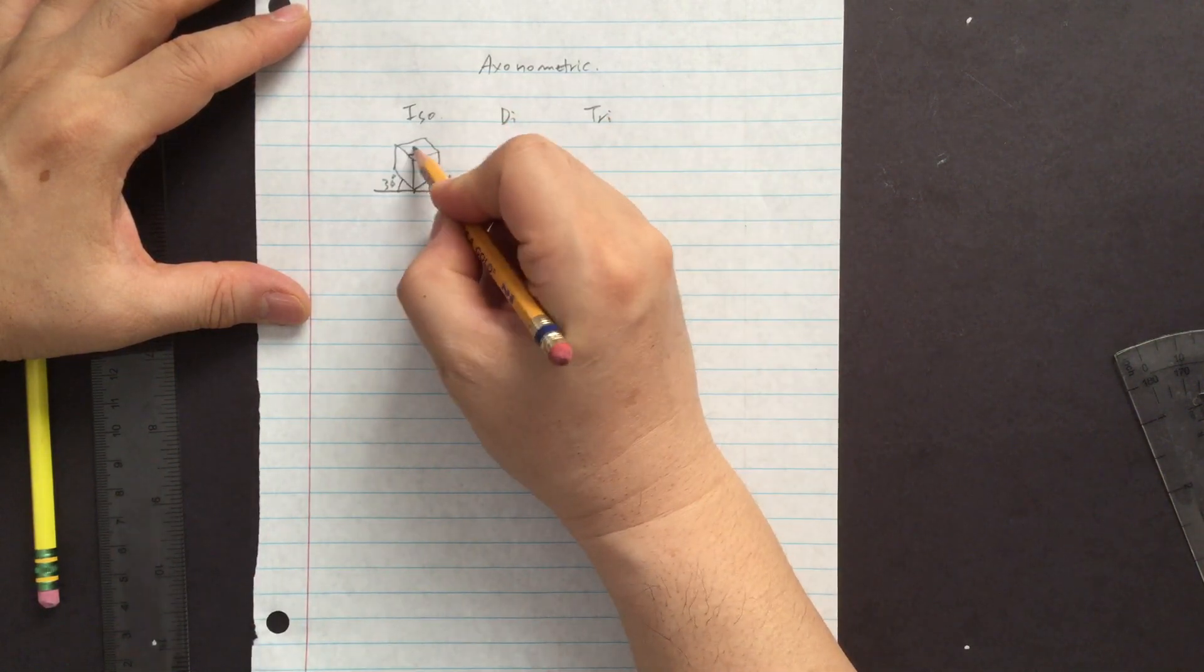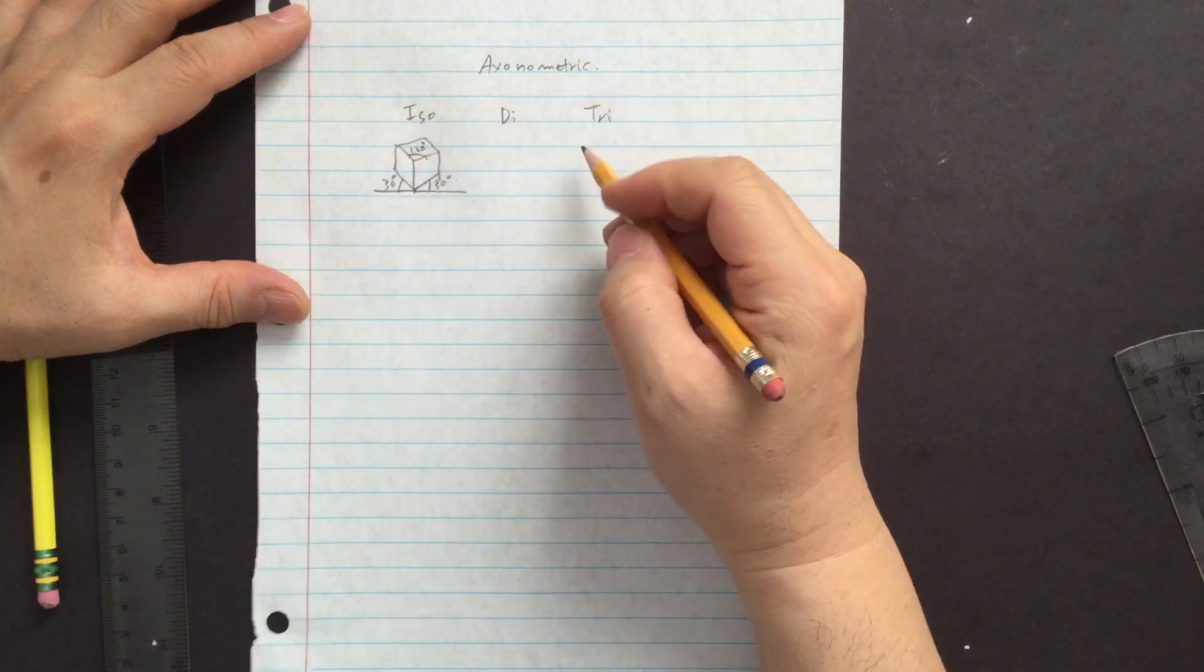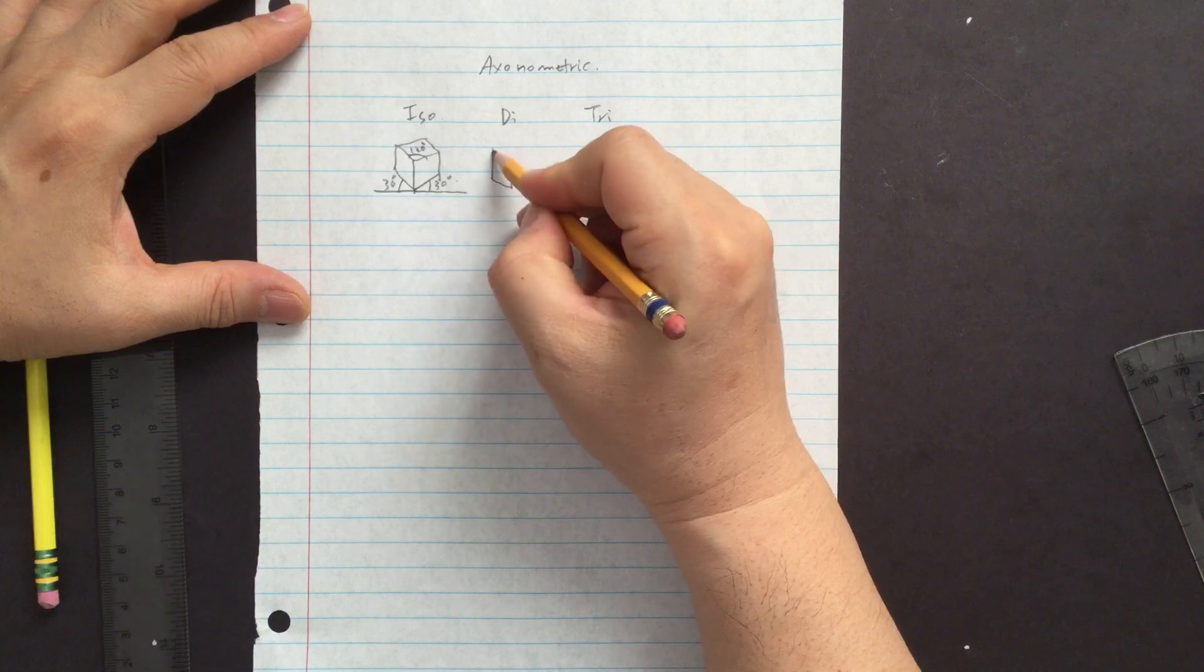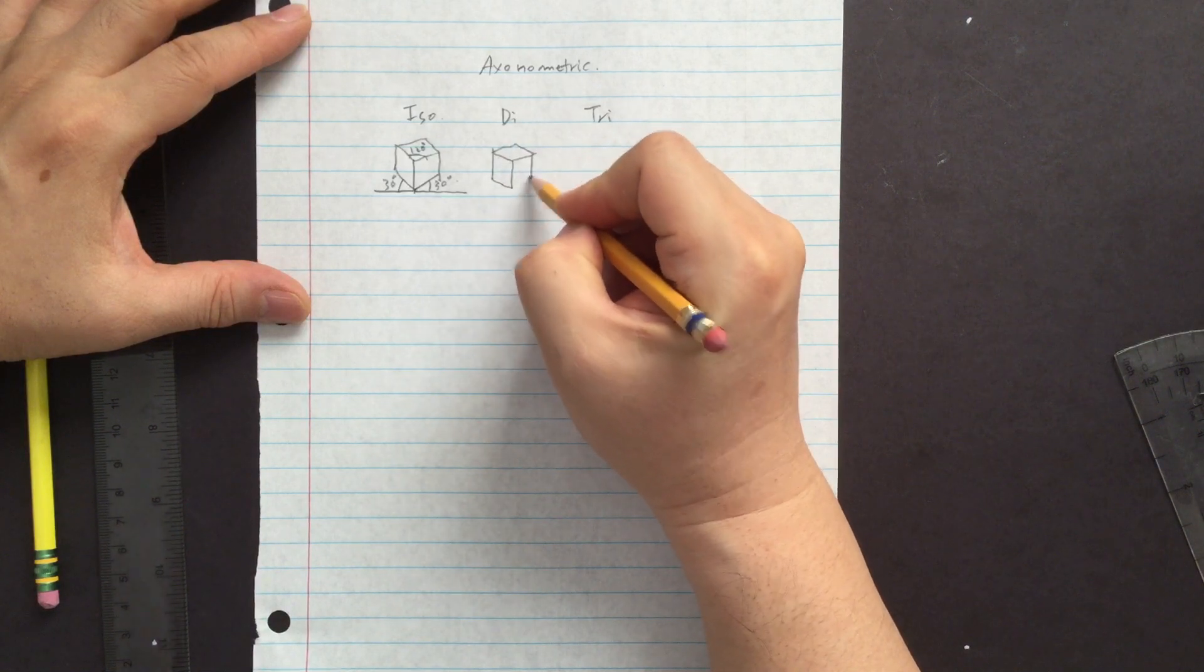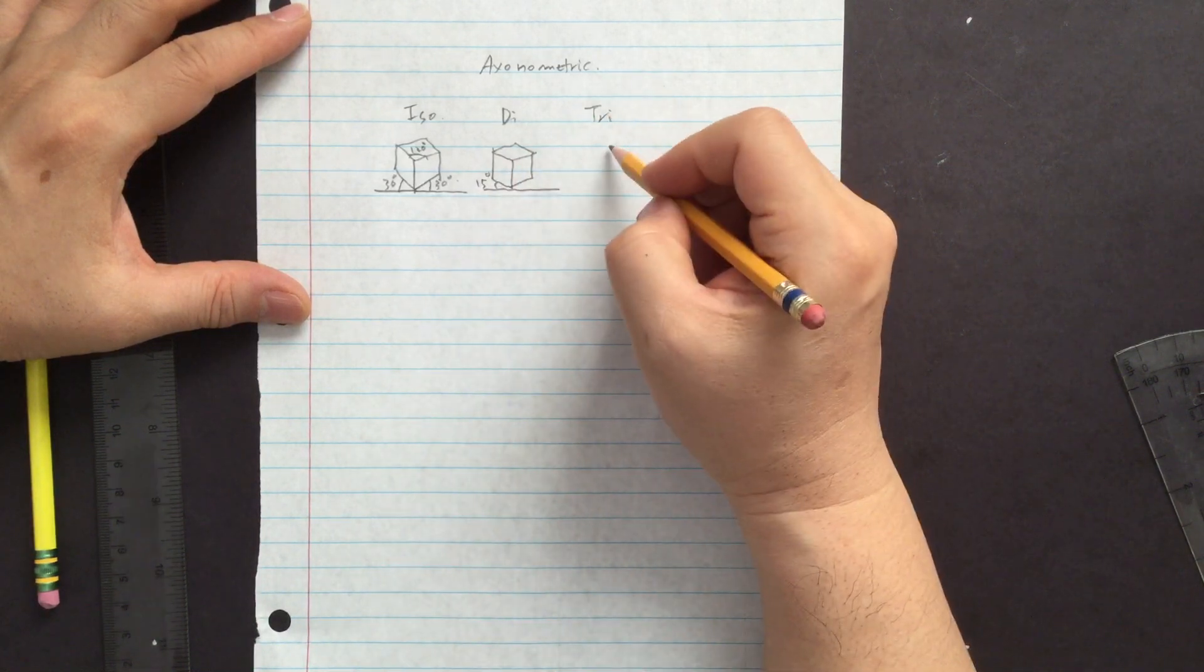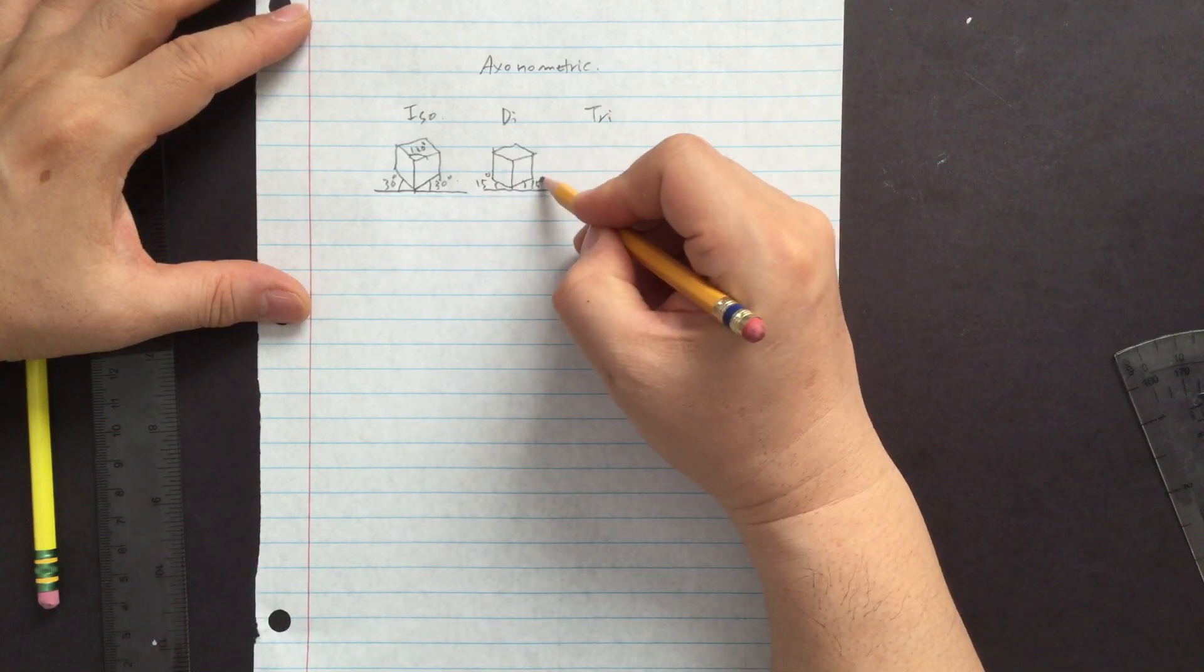So inside is 120 degree. Diametric is much less angle. So here this is supposed to be 15 degree and same 15 degree.